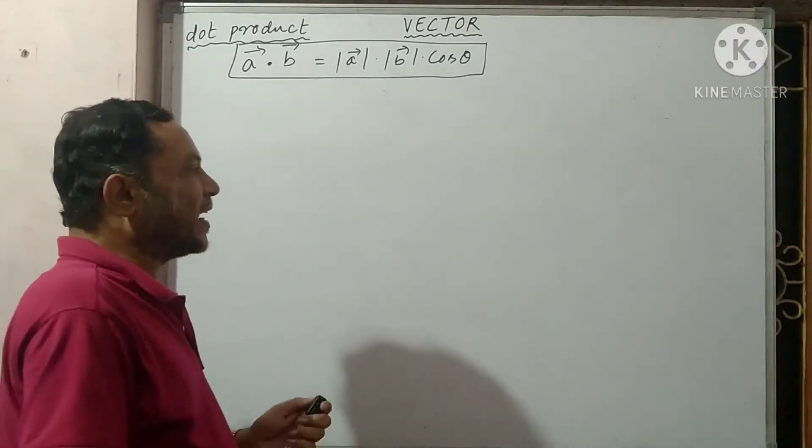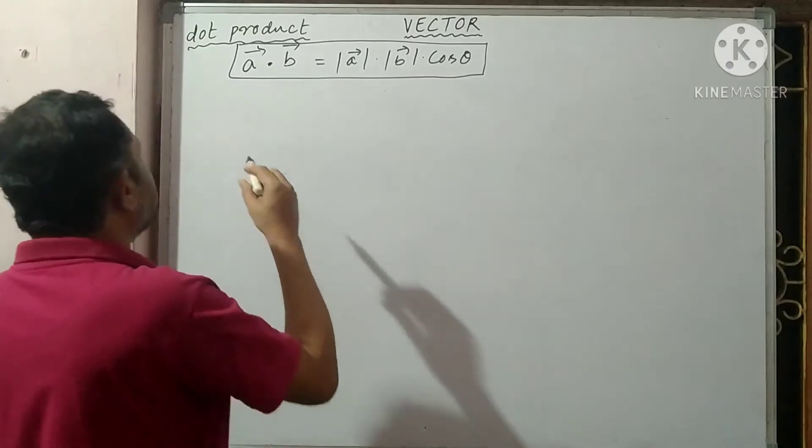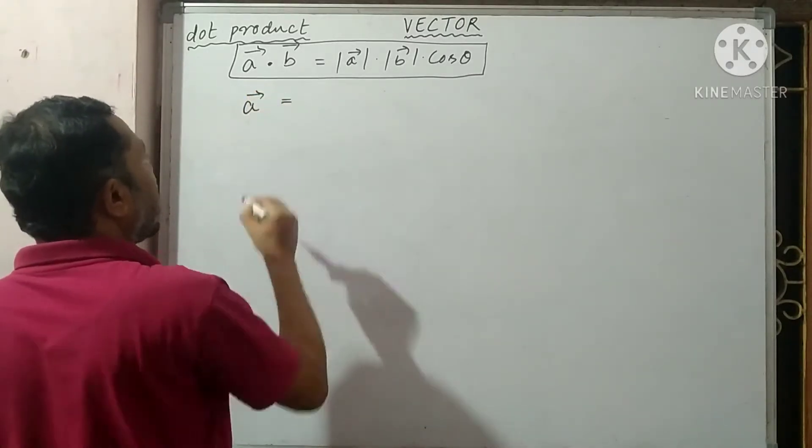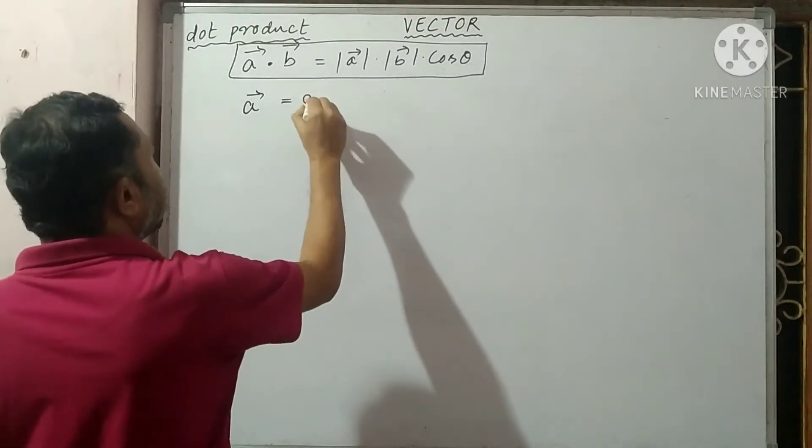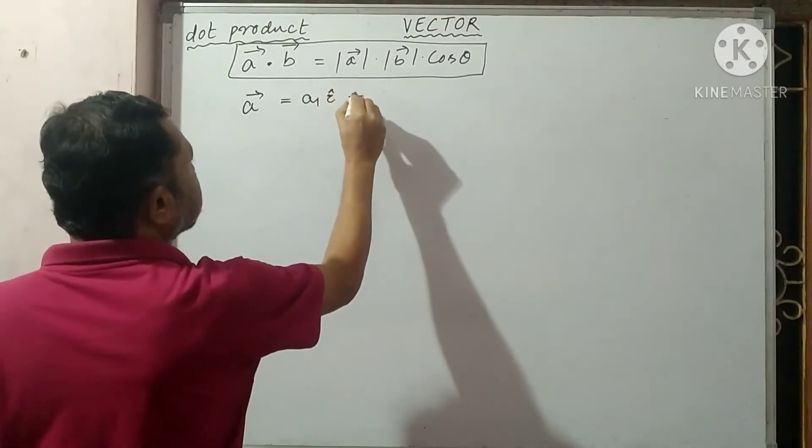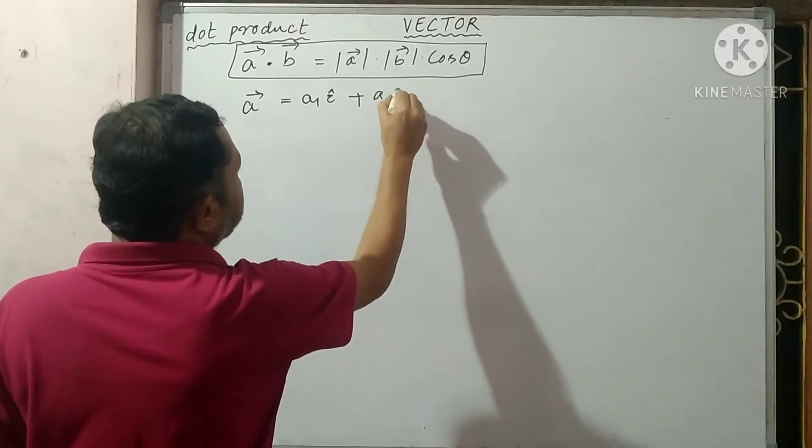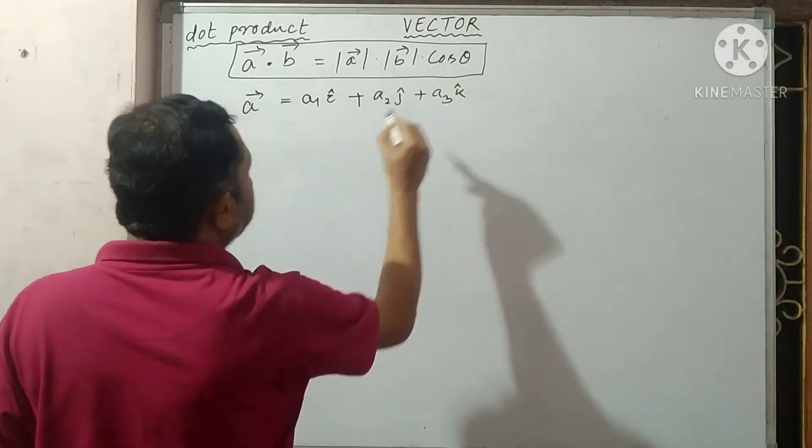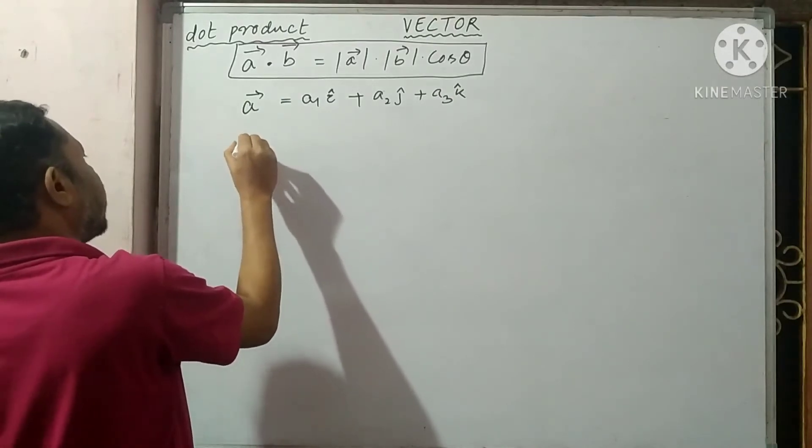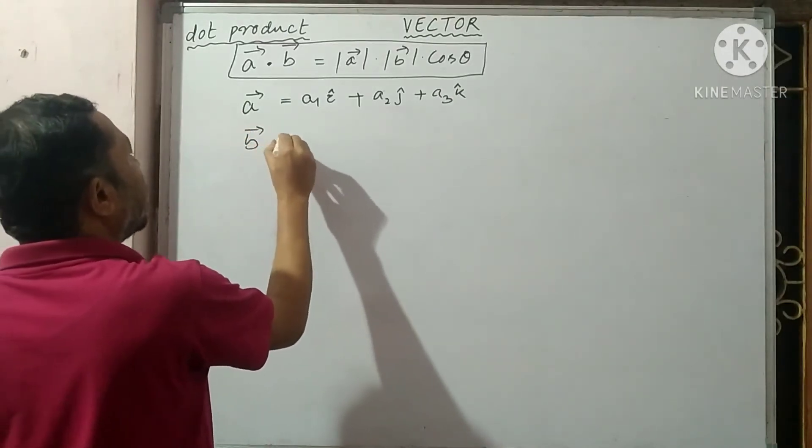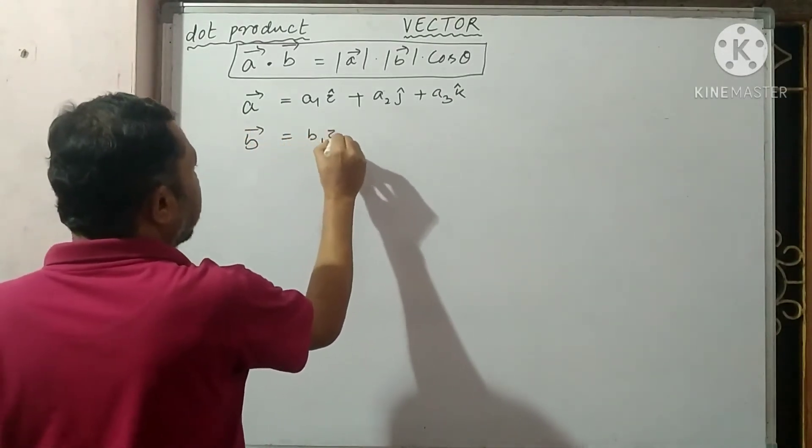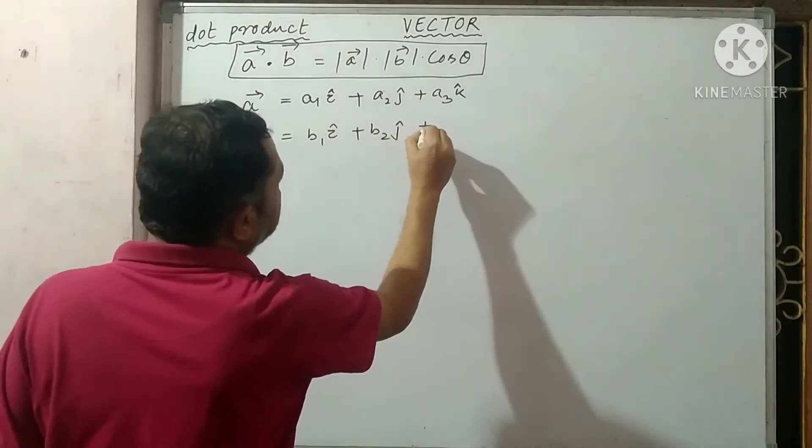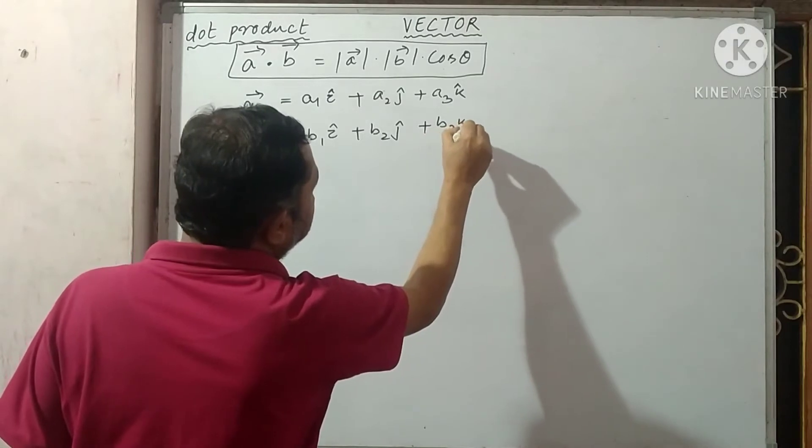If two vectors are given in their rectangular components, that is, if vector A is given as A1 i-cap plus A2 j-cap plus A3 k-cap, and vector B is given as B1 i-cap plus B2 j-cap plus B3 k-cap.